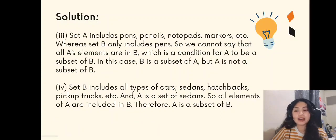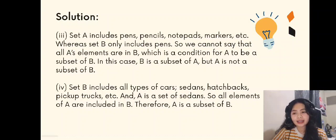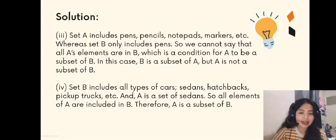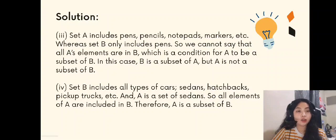Number 3: Set A includes pens, pencils, notepads, markers, etc., whereas set B only includes pens. So we cannot say that all of A's elements are in B, which is the condition for A to be a subset of B. In this case, B is a subset of A, but A is not a subset of B. For number 4, set B includes all types of cars — sedans, hatchbacks, pickup trucks, etc. — and A is a set of sedans. So all elements of A are included in B. Therefore, A is a subset of B.